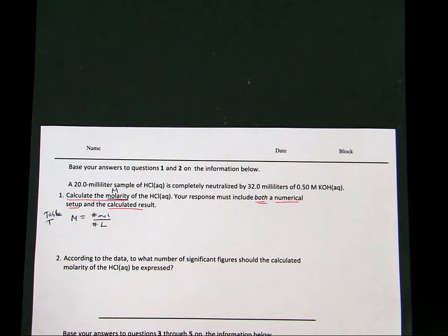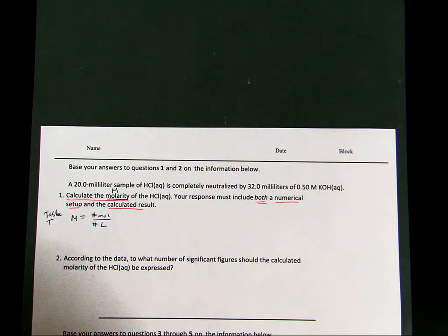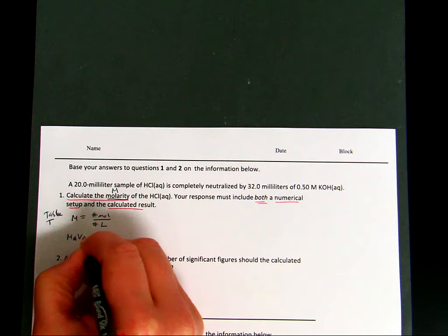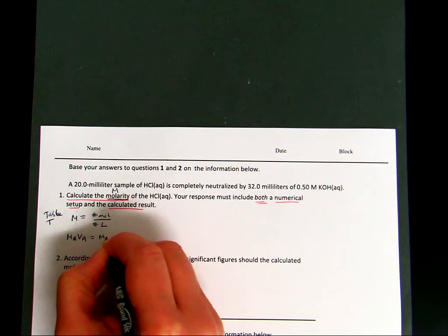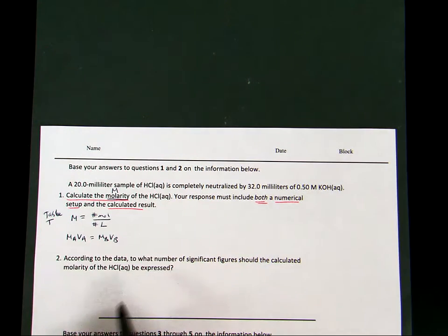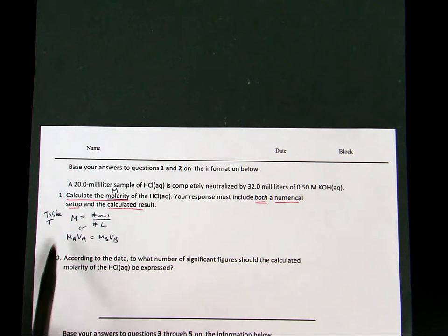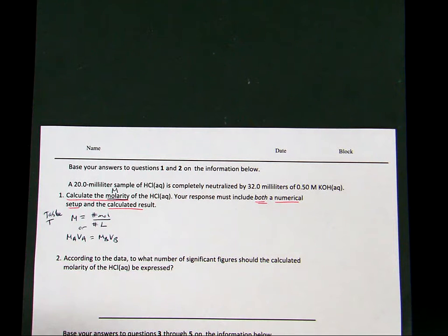And then, if you look further down your Table T, you will also see MAVA equals MBVB. So we have two different mathematical relationships that have molarity, the capital M, in them.